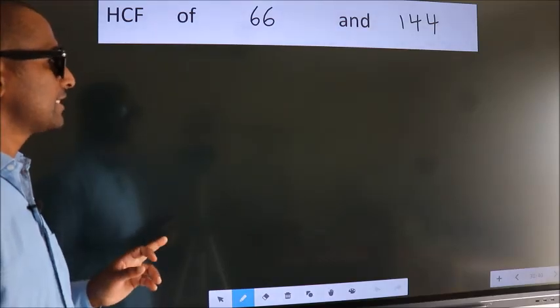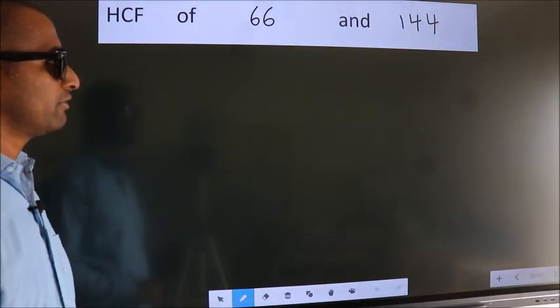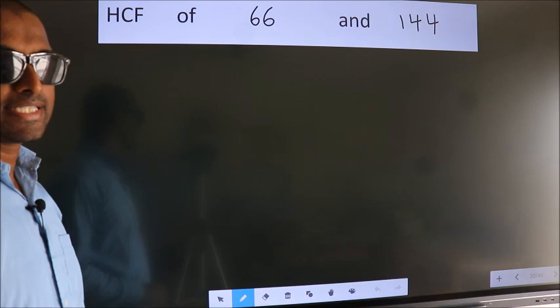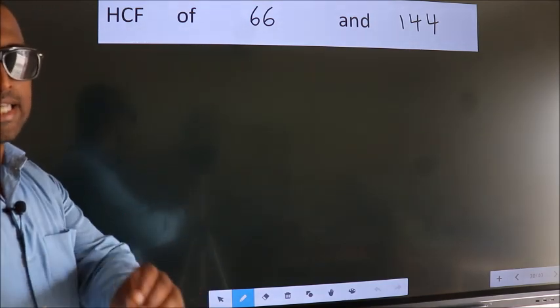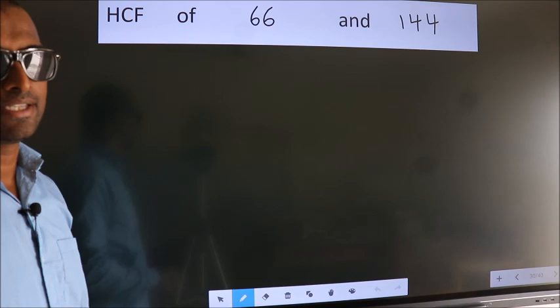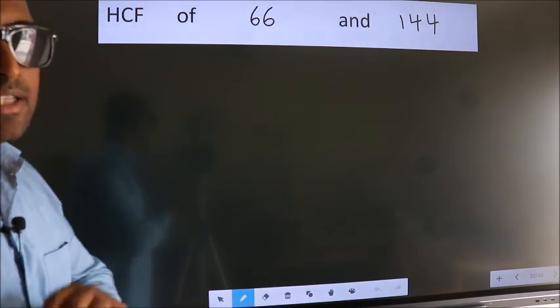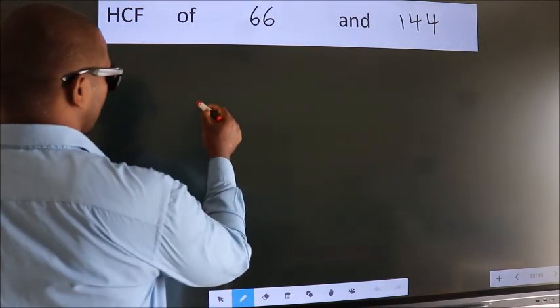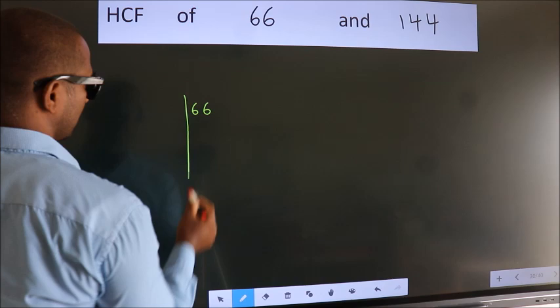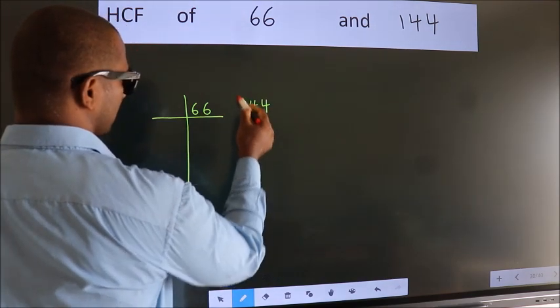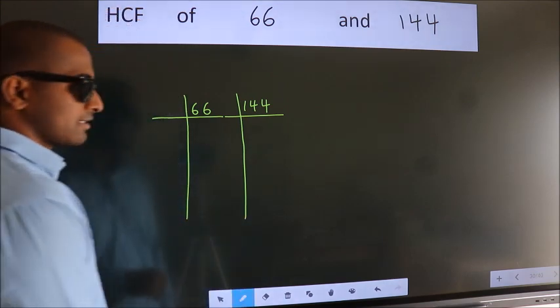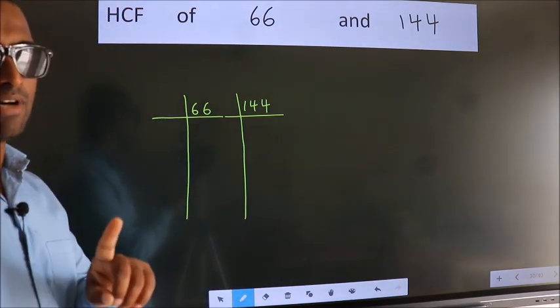HCF of 66 and 144. To find the HCF, we should do the prime factorization of each number separately. What I mean is, 66 here, 144 here. This is your step 1.